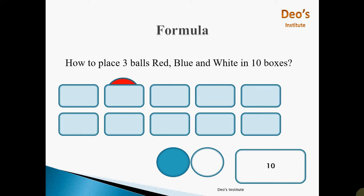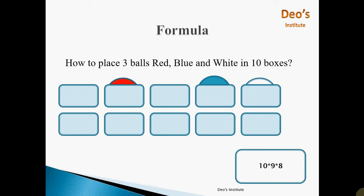For the second ball, that is the blue ball, you have only 9 options remaining. So for the second experiment you have total 9 outcomes, and as both experiments take place, so 10 multiplied by 9. In the third case, the white ball case, you have only 8 boxes remaining, so the total number of ways to place the white ball is 8. The total outcome is equal to 10 into 9 into 8.